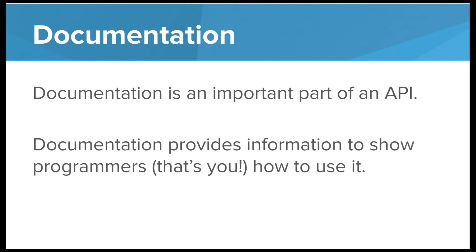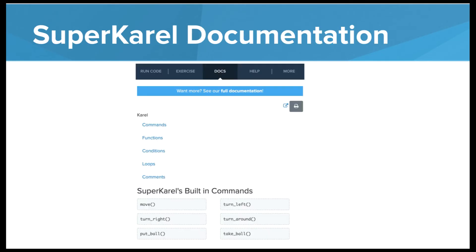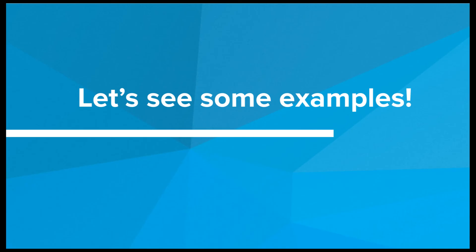One more important thing about APIs is the documentation. Documentation is an important part of APIs because it provides the information to show the programmer how to use it. If you haven't checked out the docs tab yet, this is where all the documentation for Carol and Super Carol lives. When we go to the docs we can see all the information about this API — how to use it, the proper syntax, and things like that. So that's the API documentation and that's Super Carol. Now let's go explore some in the editor.